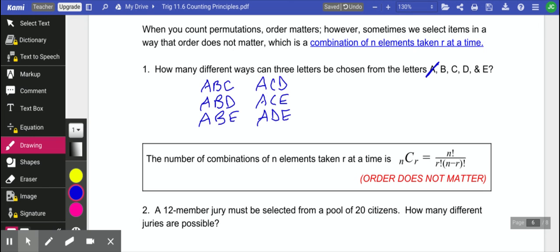So now let's not invite friend A. So we can invite friend B, C, and D, or B, C, and E, or B, D, and E. And if we don't invite friend B either, the only one left is C, D, and E. And I think that's it. I think there's just 10 different ways. So this is an example of a combination.